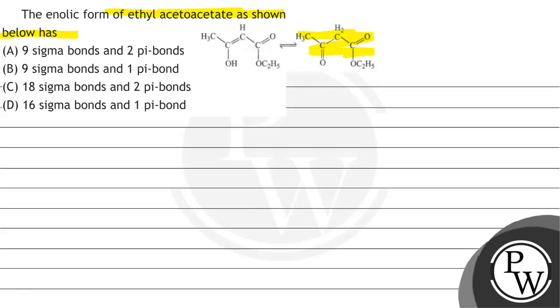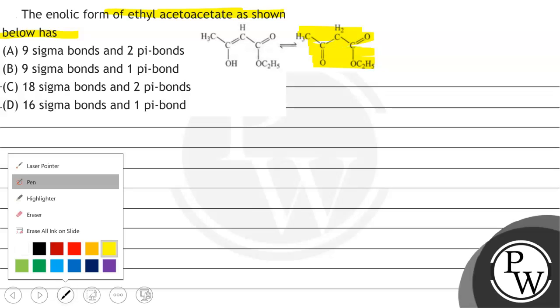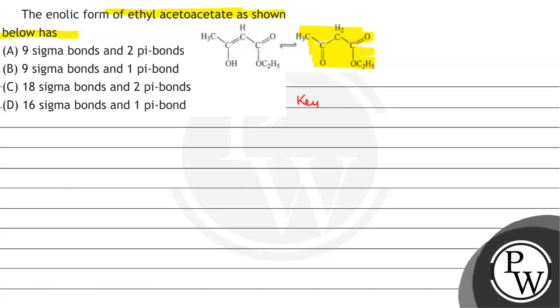This is the enolic form of ethyl acetoacetate. We will solve this question. First of all, we will see what will be the key concept in the question.